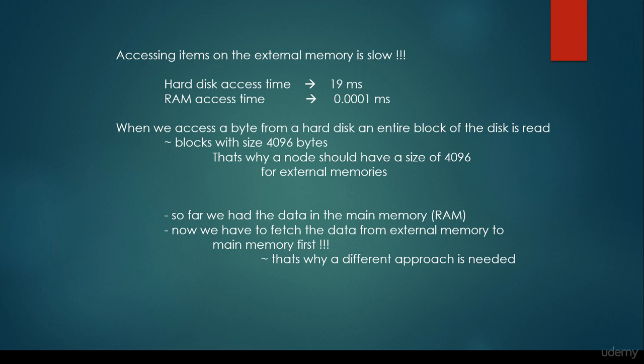This is how external memory works, and basically that's why a node should have a size of approximately 4,000 — 4,096 bytes to be precise — for external memories. This is why binary search trees are not good for this kind of architecture, and that's why B-trees are needed.